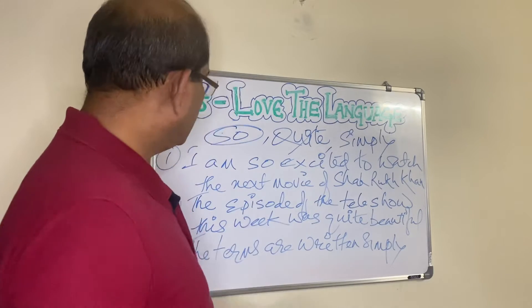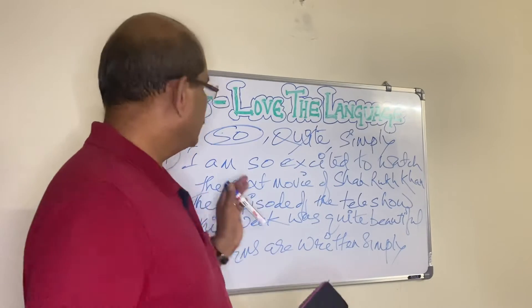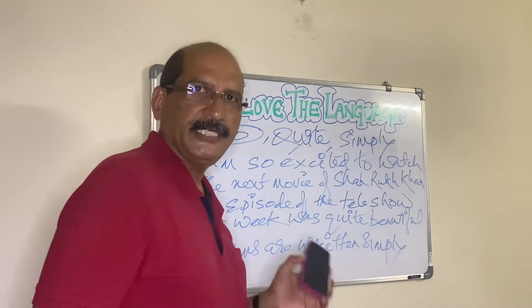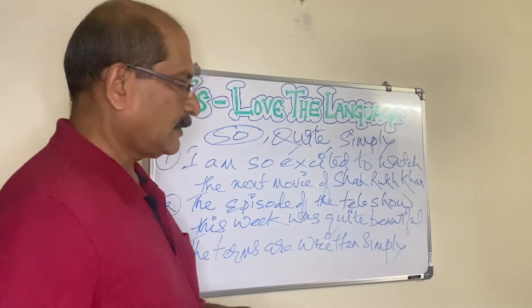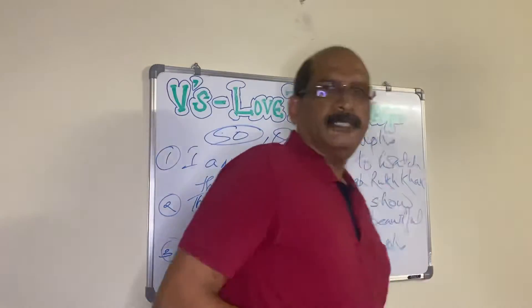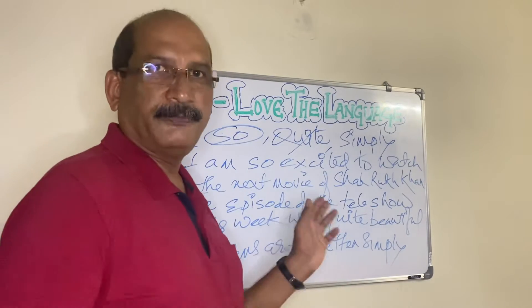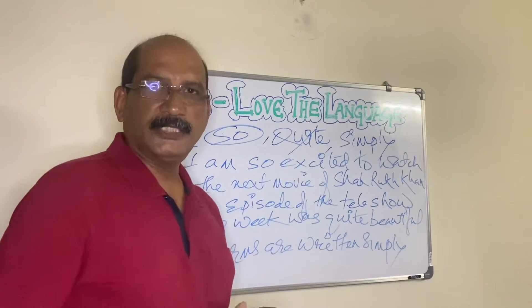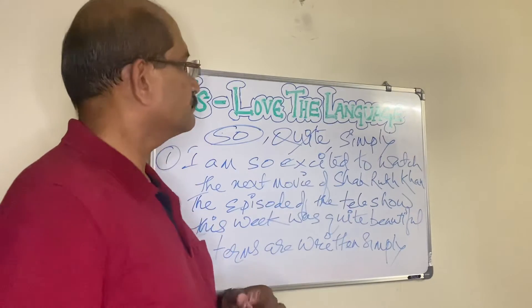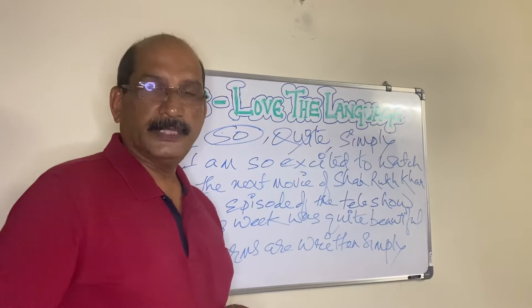Well, I think my friend's doubts are clear and we took a couple of examples also. In addition to that, here we come to the end of adverbs — that's the fifth part. We started with noun, then pronoun, adjective, verb and adverb. So this is the fifth part of parts of speech.